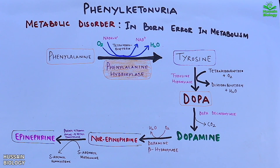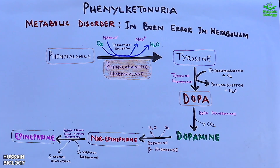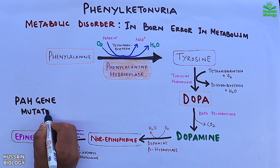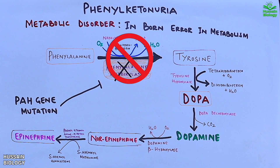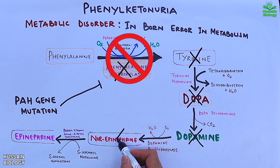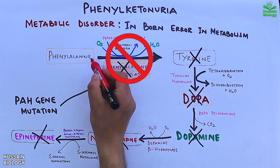This is the basic normal metabolism of phenylalanine. But when we have the PAH gene mutation, phenylalanine hydroxylase enzyme ceases to exist, which means phenylalanine will not be converted to tyrosine and we will be devoid of any further reactions. There will be absence of tyrosine, DOPA, dopamine, norepinephrine, and epinephrine — all downstream products cease to exist.